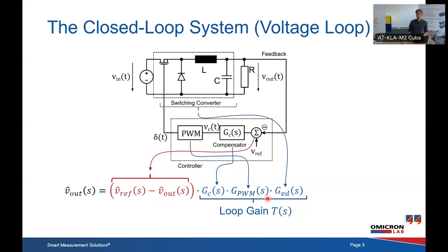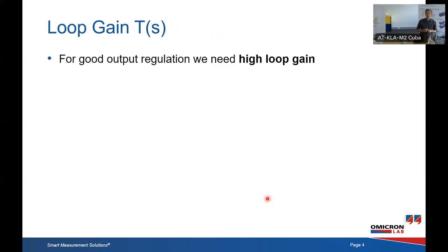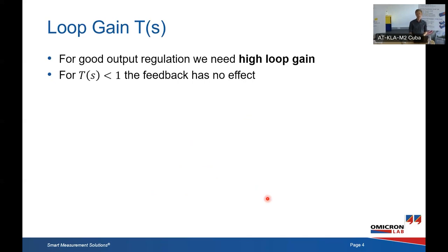And that's the loop gain — let's note it G of s. If you look at the equations, we can calculate how is the line rejection and how is the output impedance. We find that low output impedance, high ripple rejection, and good regulation are achieved if you have high loop gain. So we need high loop gain. And if the loop gain is smaller than one — that's zero dB — so as soon as we cross the zero dB line after the crossover frequency, the loop gain is smaller than one and the feedback has nearly no effect anymore.